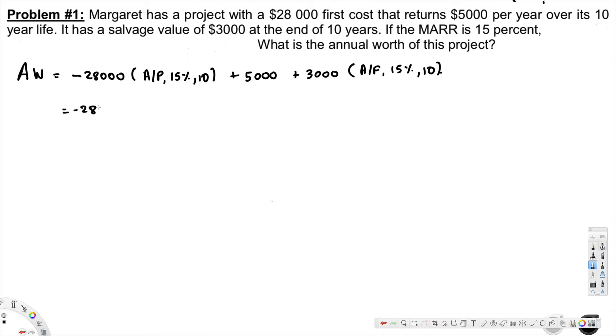Now negative $28,000, and if you look at this one in table, that is 0.19925, plus $5,000, plus $3,000 multiply by this value. If you look at this one in table, this is 0.04925.